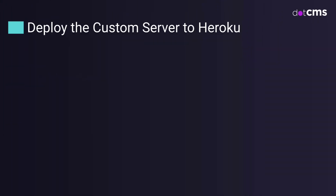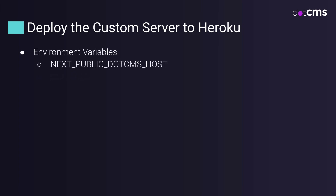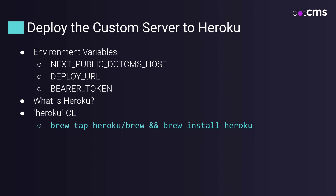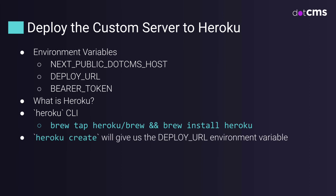As Freddy explained, we need a custom server to use .CMS edit mode anywhere. Vercel is serverless, so in order to run a server, we will deploy to Heroku. We need the same three environment variables set up earlier: NextPublic.CMS host, the deploy URL, and the bearer token. What is Heroku? Heroku is a platform as a service that enables developers to build, run, and operate applications entirely in the cloud. We need to install the Heroku CLI with the provided command, then run Heroku create — this will give us a deploy URL environment variable — and finally deploy with git push heroku master.